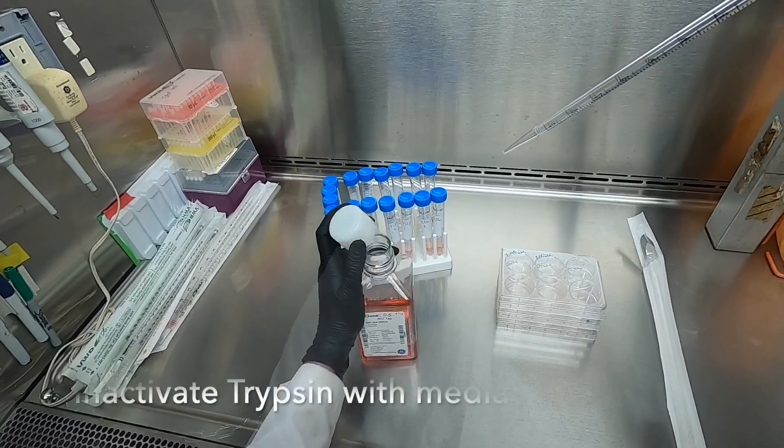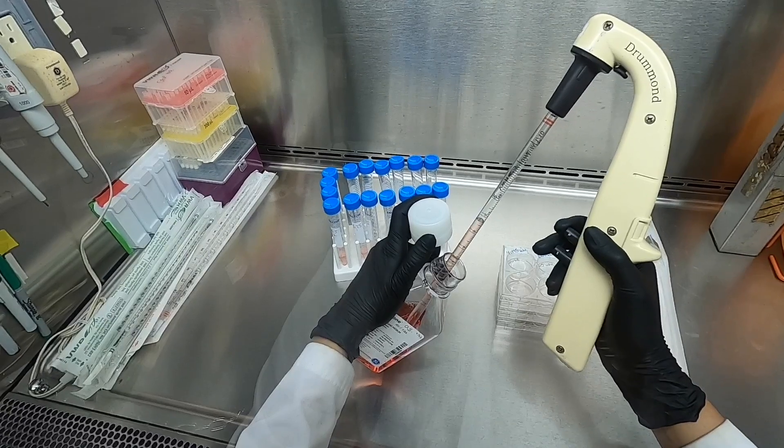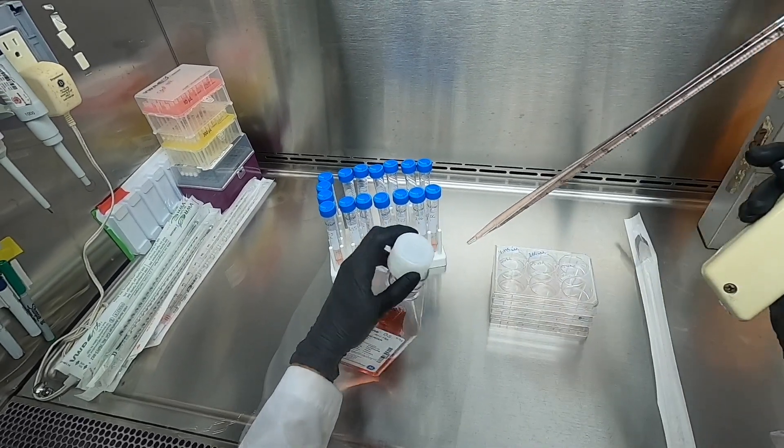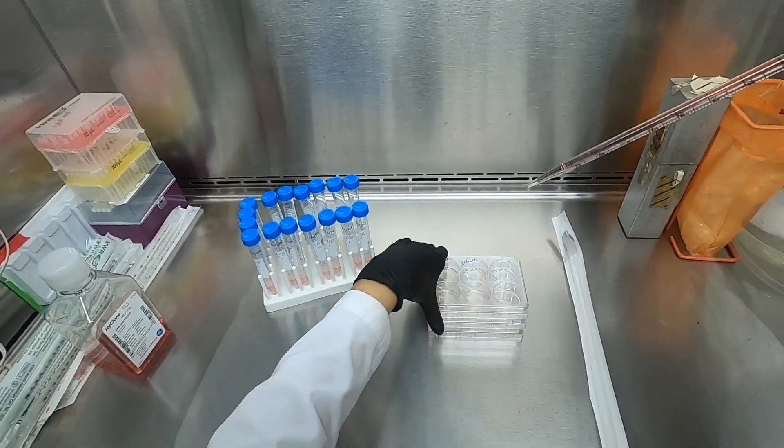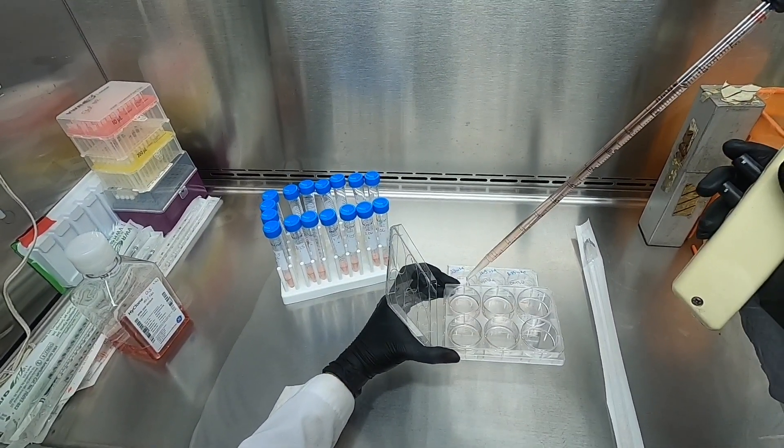Similar to passaging cells, we will be inactivating our trypsin using RPMI media containing FBS. We are adding the media to all wells at once in order to stop the trypsin from working. We will then proceed to work on individual wells.